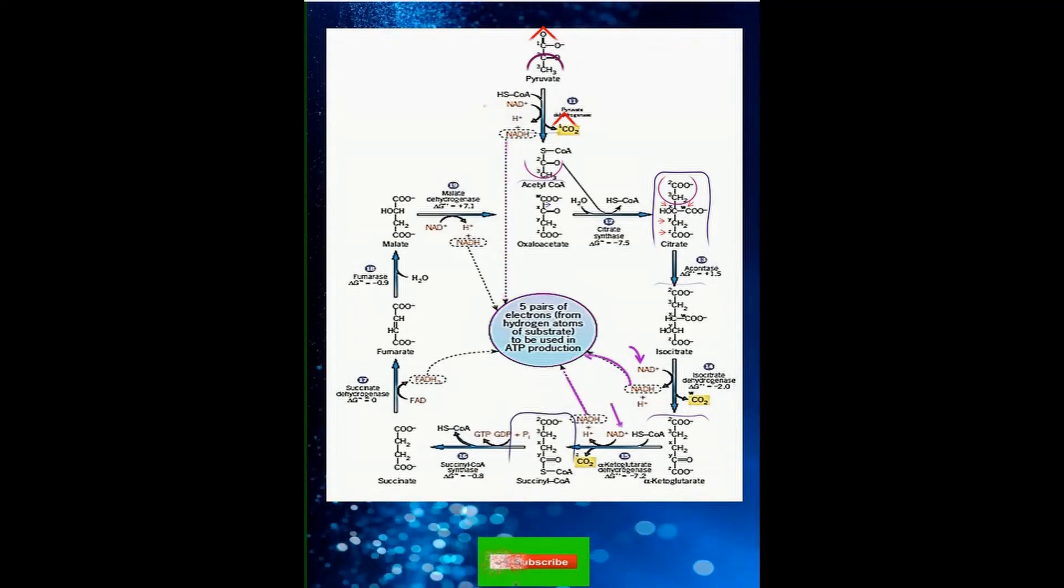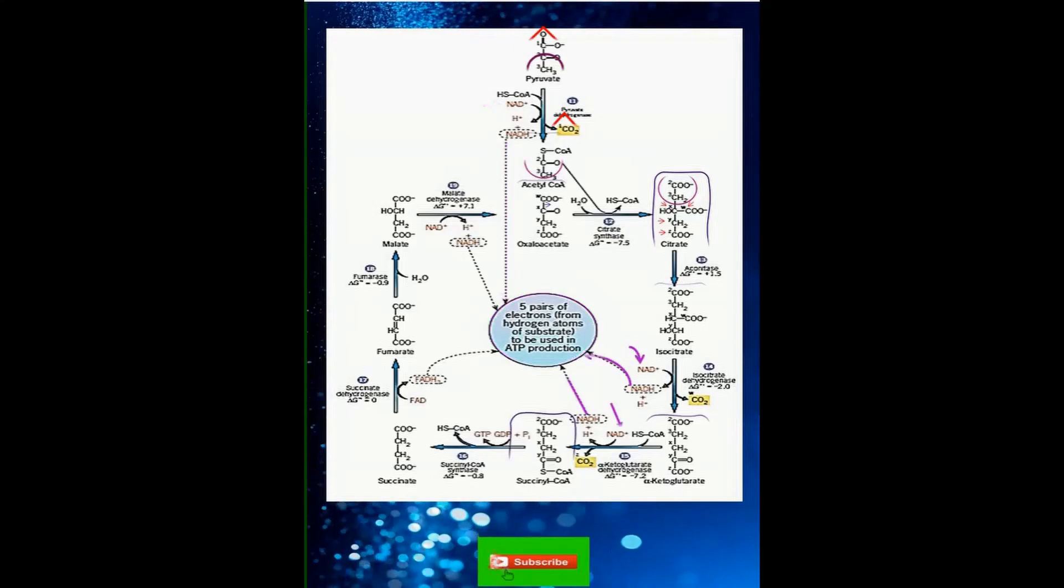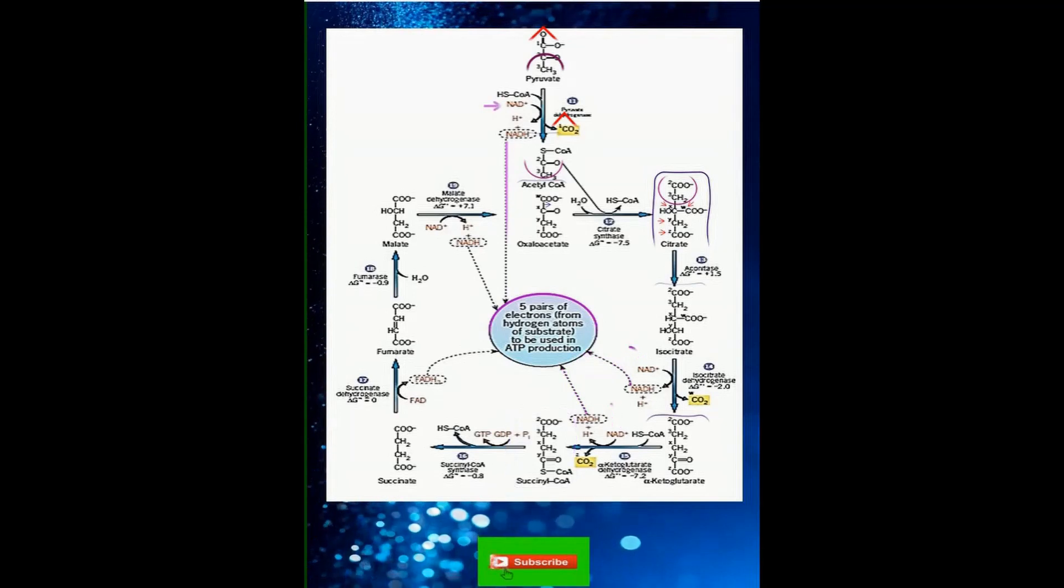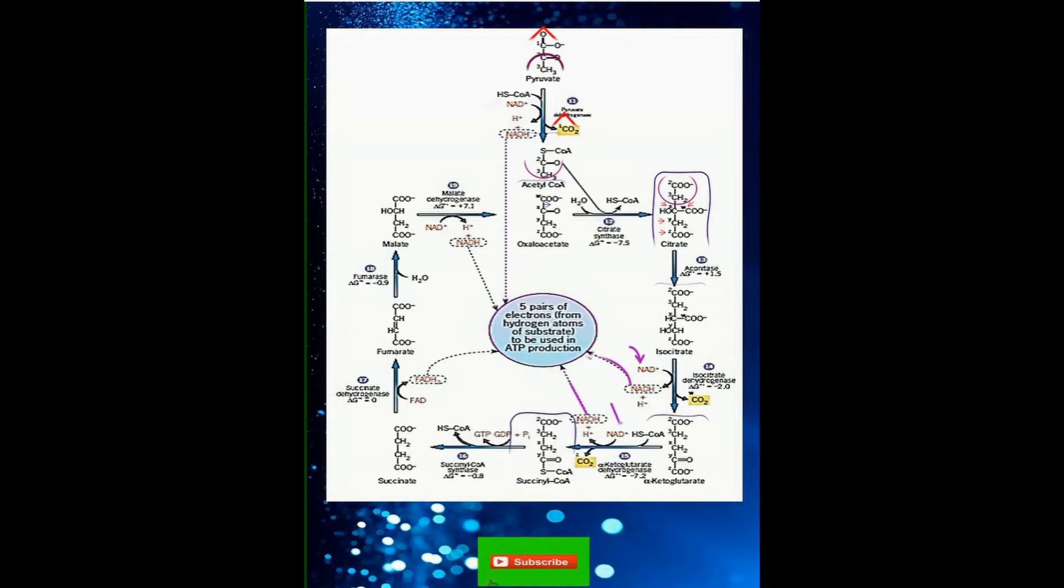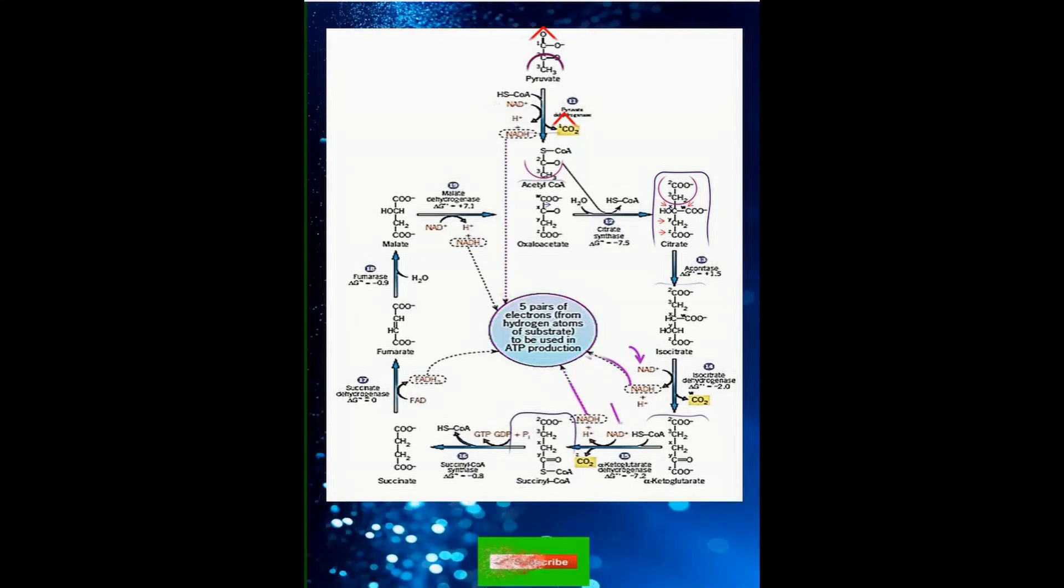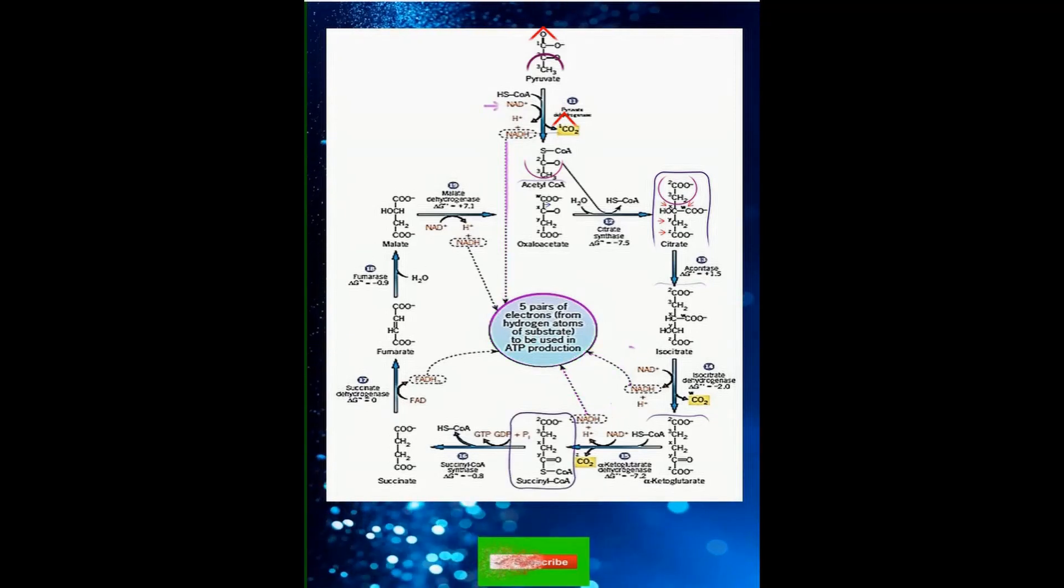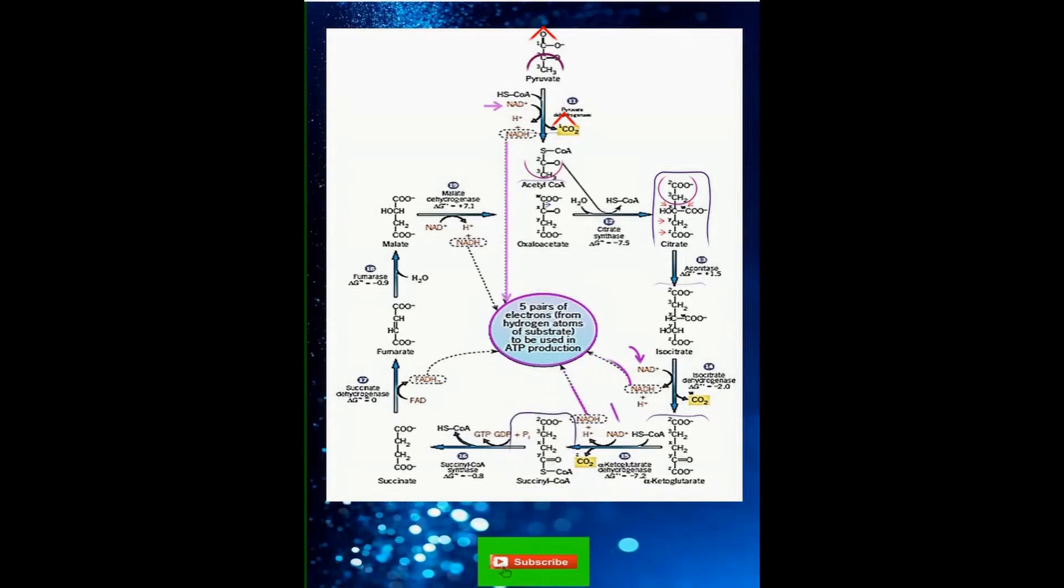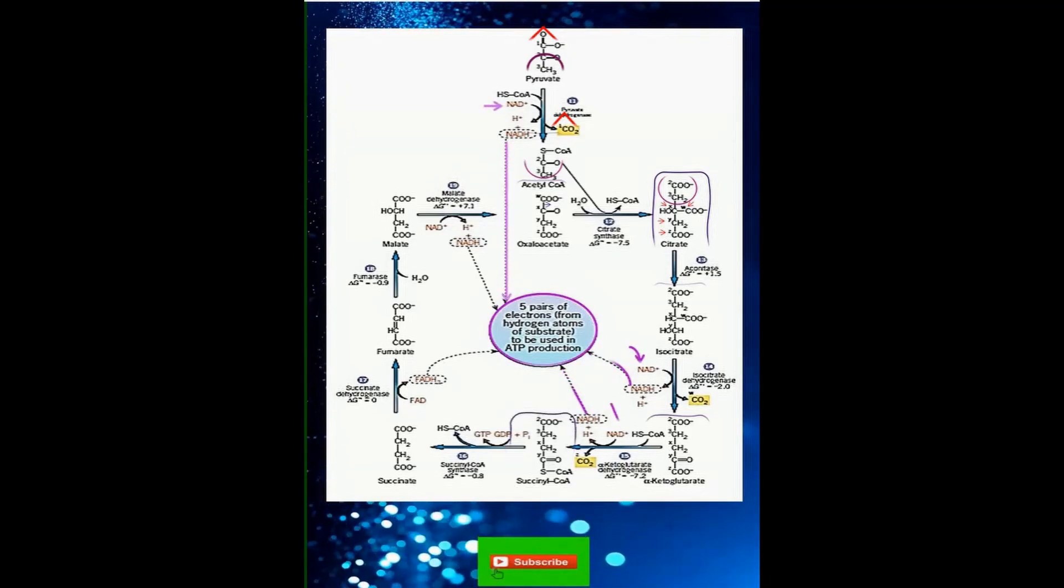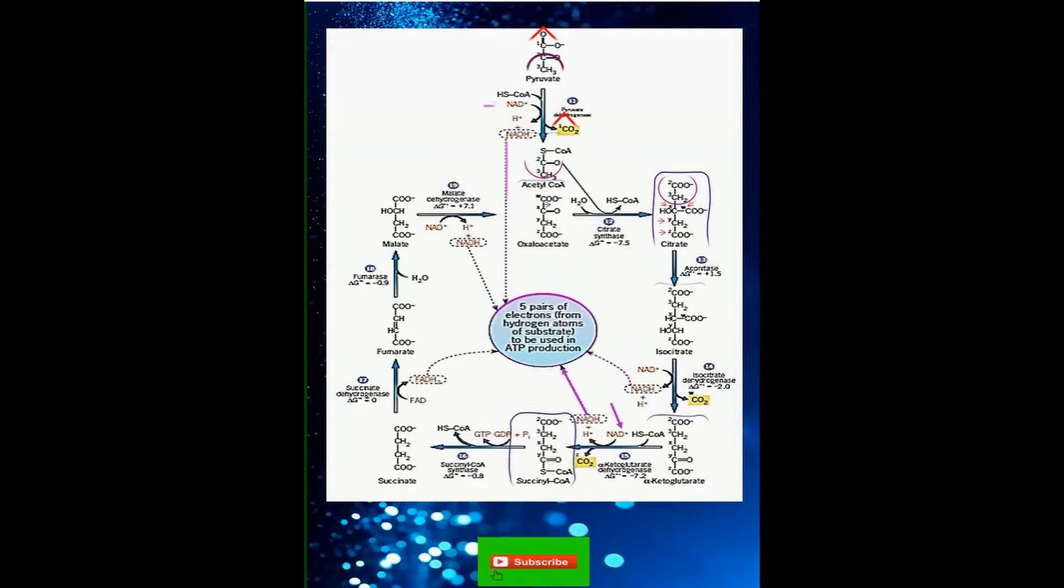The fifth step is catalyzed by succinyl-CoA synthetase. This step directly produces ATP because the substrate's link to coenzyme A is sufficiently energetic to power the reaction. In mitochondria, the enzyme links to the succinyl-CoA and uses energy from releasing the coenzyme to add phosphate to GDP to produce GTP. In the cytoplasm, a variation on this enzyme can produce ATP directly. This also begins the manipulation of the substrate to reproduce its original form.